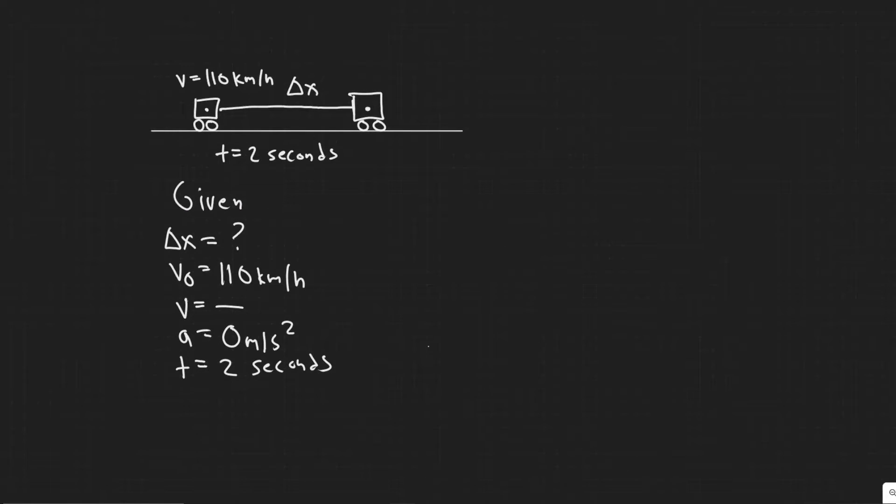So what I want you to do is just look up kinematic equations. And then we're going to decide which equation to use based on the variables given. So the one we're going to use is this one right here. Delta x equals v sub zero times t plus one half at squared.